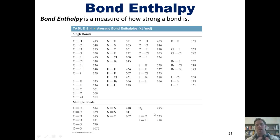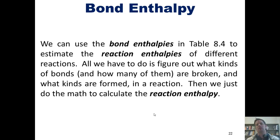This table becomes the bread and butter of the ensuing problems that we'll do. Before getting to that, however, I want to show you some more theory. We can use bond enthalpies from the previous table to estimate overall reaction enthalpies of different reactions. All we have to do is figure out what kinds of bonds and how many of them are broken in the reaction, and what kinds of bonds are formed. Then we just do math to calculate the overall reaction enthalpy.